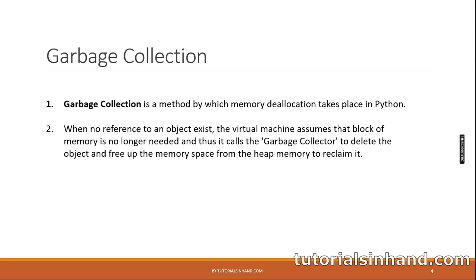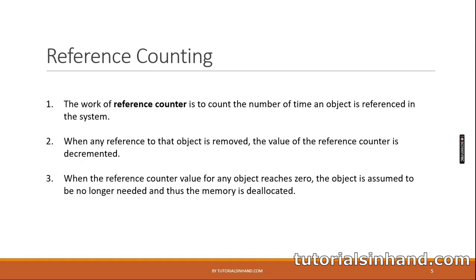Now let's learn about reference counting. The work of the reference counter is to count the number of times an object is referred to in the system. When any reference to that object is removed, the value of the reference counter is decremented. When the reference counter value for any object reaches zero, the object is assumed to be no longer needed and the memory is deallocated. Reference counting and garbage collection work hand in hand to deallocate unused blocks of memory.